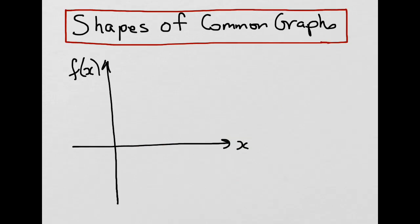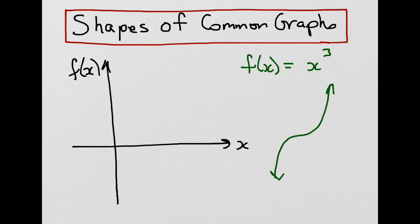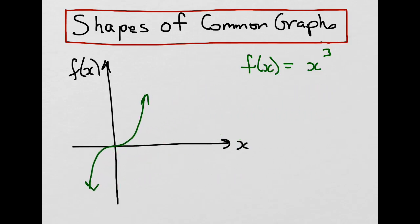Let's look at one more function. Let's say we have f(x) = x³ — a cubic function with a degree of 3, giving us 3 possible solutions and 3 possible intercepts. These types of functions look like snakes. It starts from the bottom left and moves up to the top right, going through the origin with that particular shape.